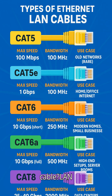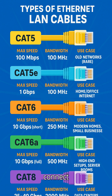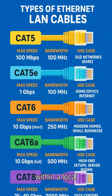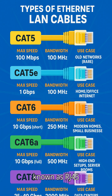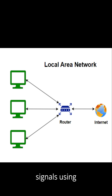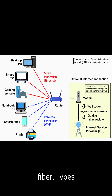What is a LAN cable? A LAN cable, or local area network cable, is a type of network cable used to connect devices like computers, routers, and switches within a local network. The most common type is the Ethernet cable, also known as an RJ45 cable. It transmits data signals using twisted copper wires or fiber.